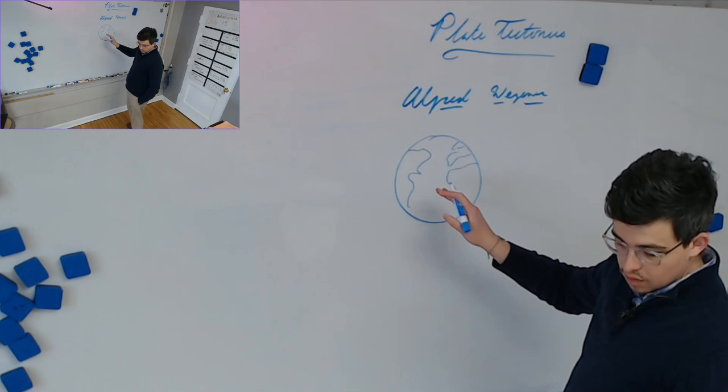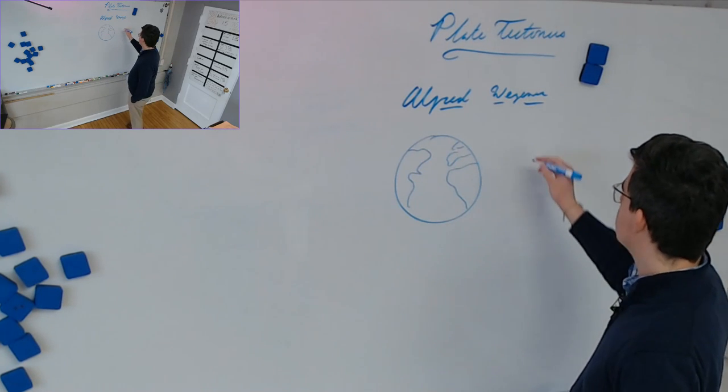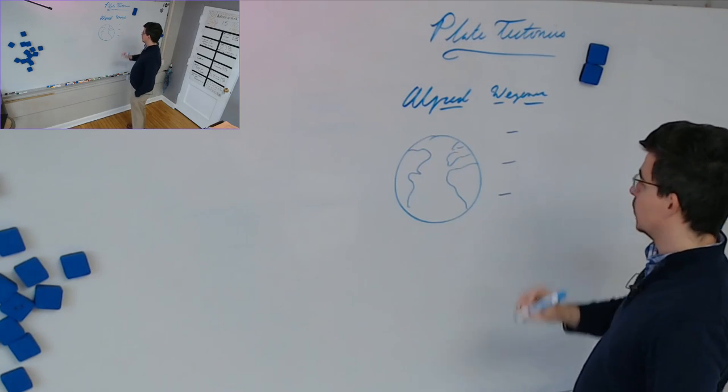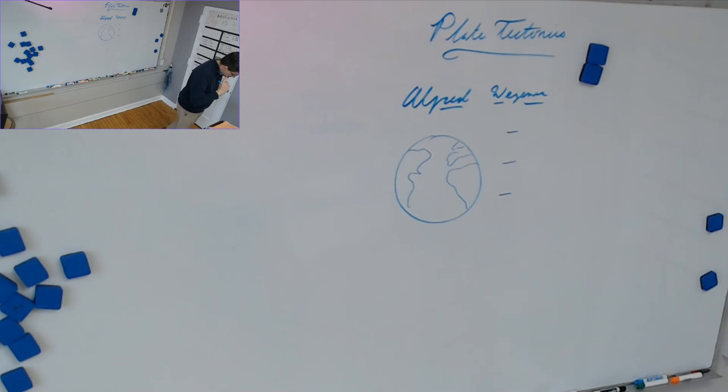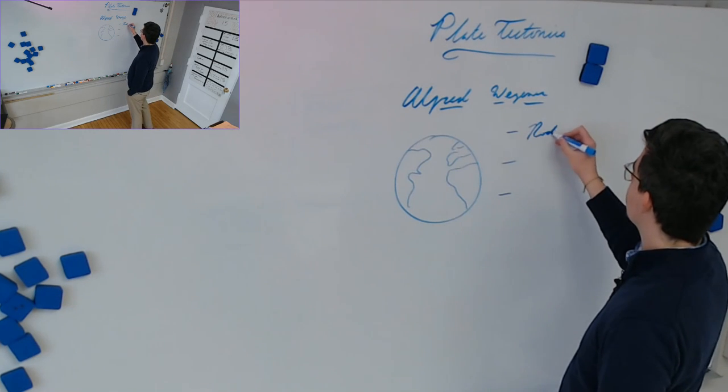They do fit together, though. What are some other pieces of evidence that he used? Some of his realistic evidence that he used. Was it like formations that were formed? You mean rock formations, probably. So yeah, there were rock formations.